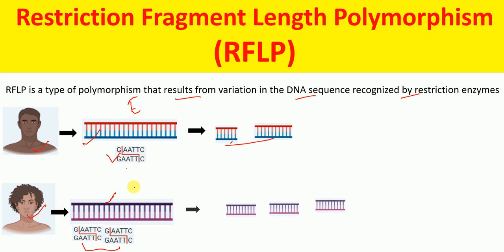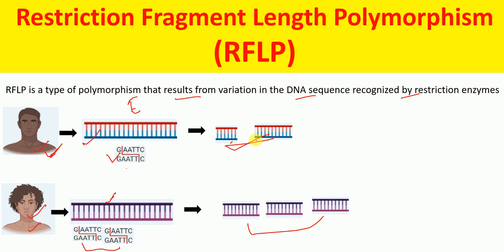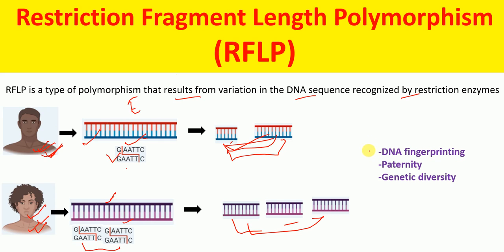The restriction enzyme cuts the second DNA molecule into three fragments. So from the first sample we have two fragments, and from the second sample we have three fragments. By comparing these to positive controls — DNA from known individuals — we can determine which sample comes from which person. RFLP is used in DNA fingerprinting, paternity testing, and assessing genetic diversity.